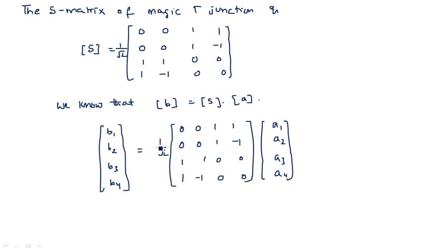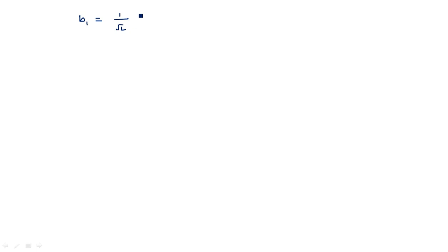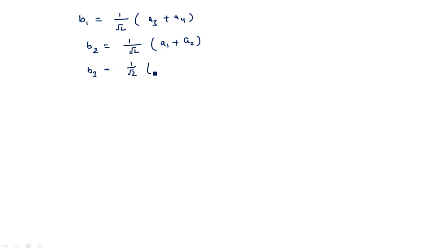Now write the equations for b1, b2, b3, and b4 by multiplying the rows of the S-matrix by the column of the a-matrix. We get: b1 = (1/√2)(a3 + a4), b2 = (1/√2)(a3 - a4), b3 = (1/√2)(a1 + a2), and b4 = (1/√2)(a1 - a2).